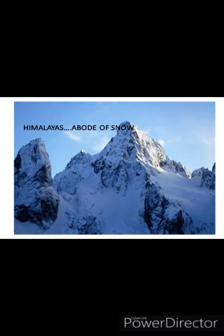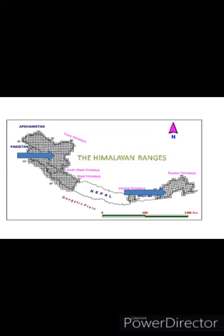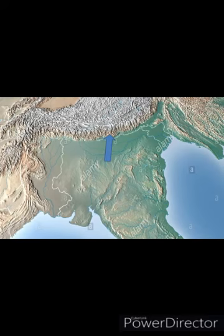The word Himalaya means home of snow, which is covered with snow. The Himalayan range stretches from Jammu and Kashmir in the north to Arunachal Pradesh in the northeast. The Himalayan ranges are divided into three mountain ranges: the Greater Himalayas i.e. the Himadri (the top portion, the peak of the mountains), the Lesser Himalayas i.e. the middle portion, and the Outer Himalayas i.e. the lowest or southernmost portion.